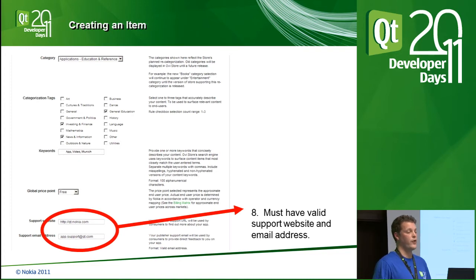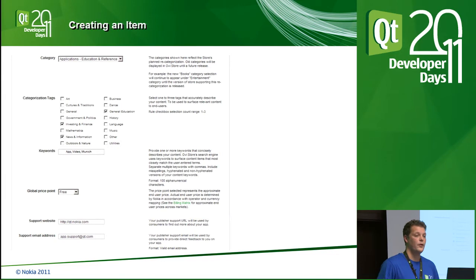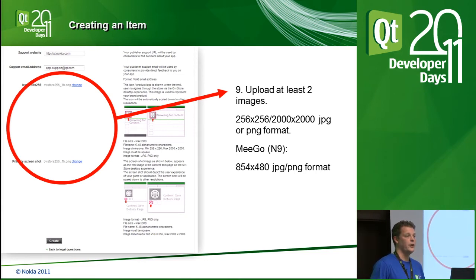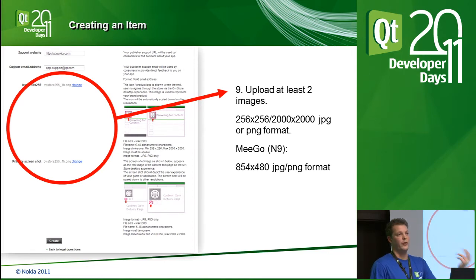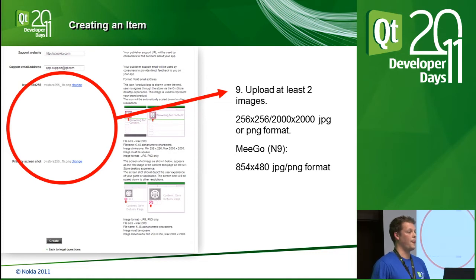These support addresses are displayed just below the description text on the detail screen. Once you've filled out all those fields, you need to upload some imagery. The first image is the icon, displayed in the app list when the user is browsing. The icon needs to be square, 256 by 256 minimum, no larger than 2,000 by 2,000. It's also recommended that the app icon you're using in the actual OS should match the icon you're using for this metadata field.